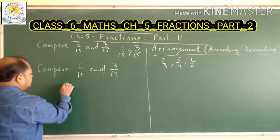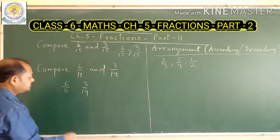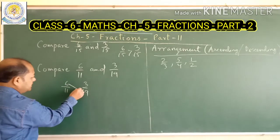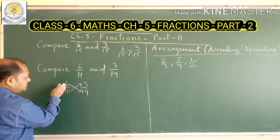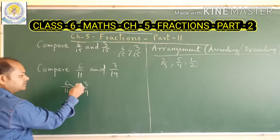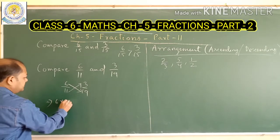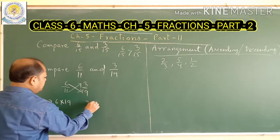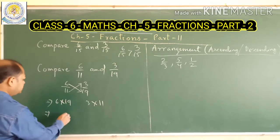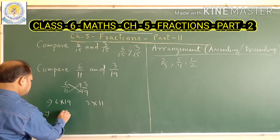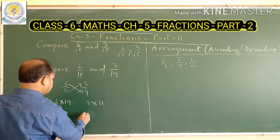Let us cross multiply. So 6 upon 11 and 3 upon 19. Just cross multiply: 6 with 19 and 11 with 3. So 6 into 19 will be on the left side and 11 into 3 will be on the right side. 6 into 19 is 114, and 3 into 11 is 33.